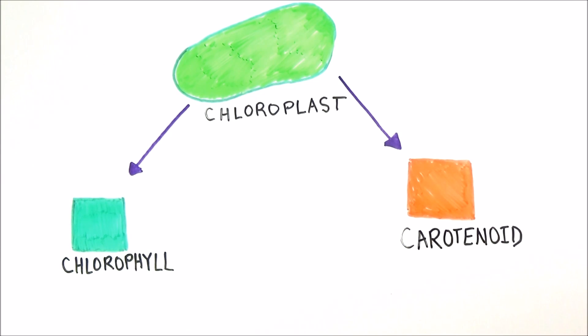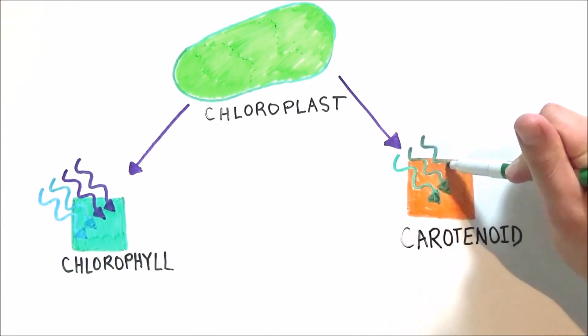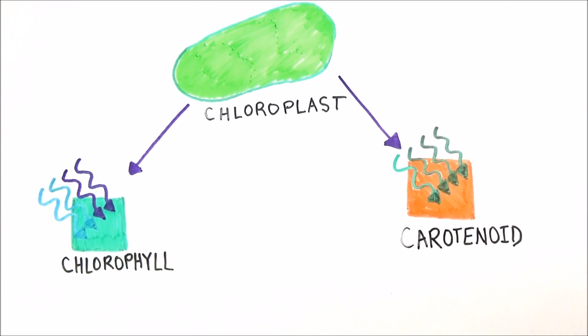Since these pigments can only absorb light energy that is a specific color, green chlorophyll pigments absorb the more powerful blue to violet sun rays and reflect green, while carotenoid pigments absorb the less powerful green sun rays and reflect yellow or red.